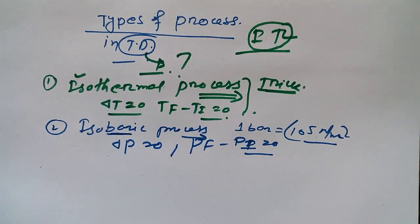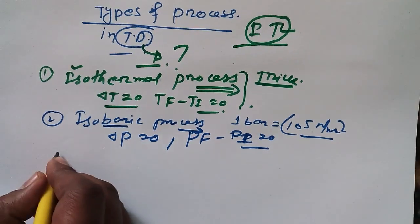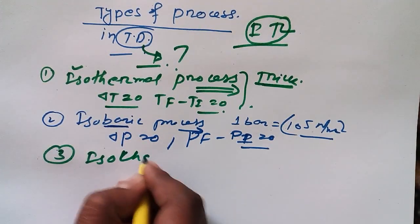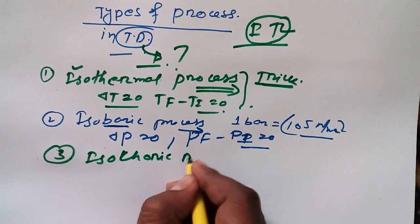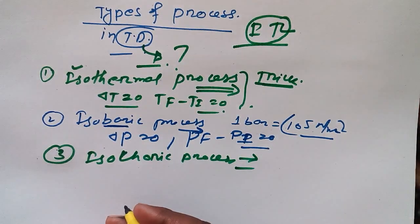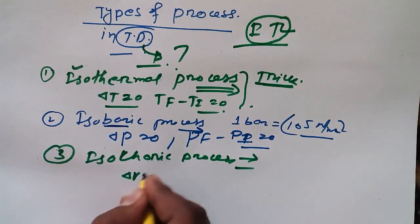This is isobaric process. Now let's move to third one, that is known as isochoric process. In this process we have Delta V equal to zero. There is no change in volume.